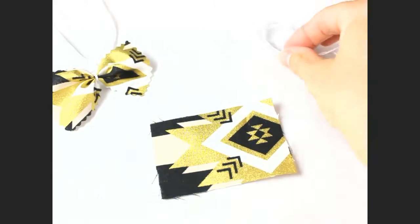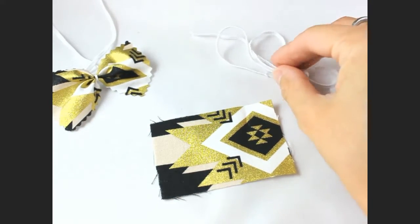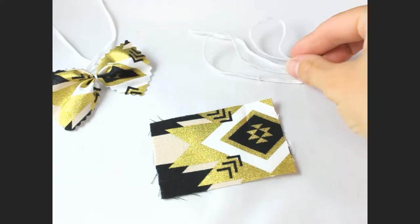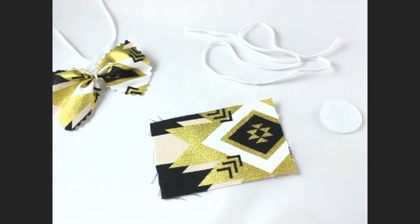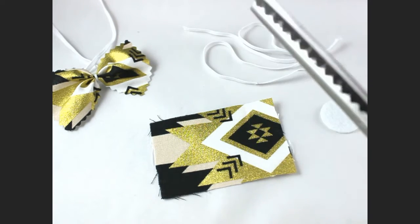You will also need some skinny elastic. This fits a newborn, so this is 13 and a quarter inches long. A one-inch felt circle, and you'll need some pinking shears. These shears have the little ridges in the middle.